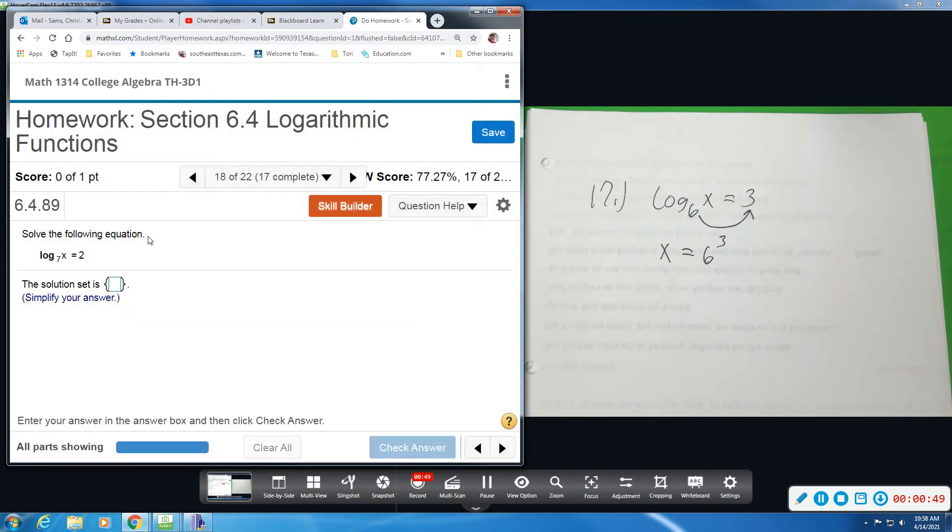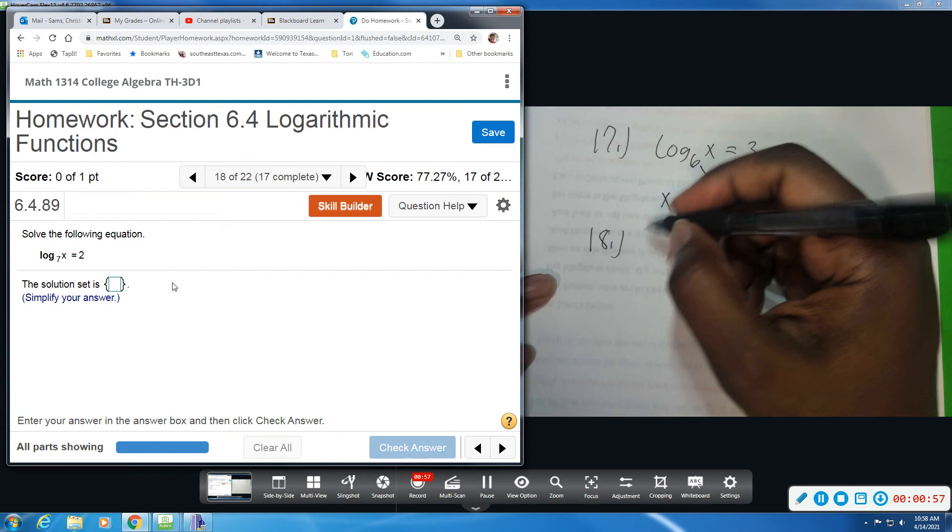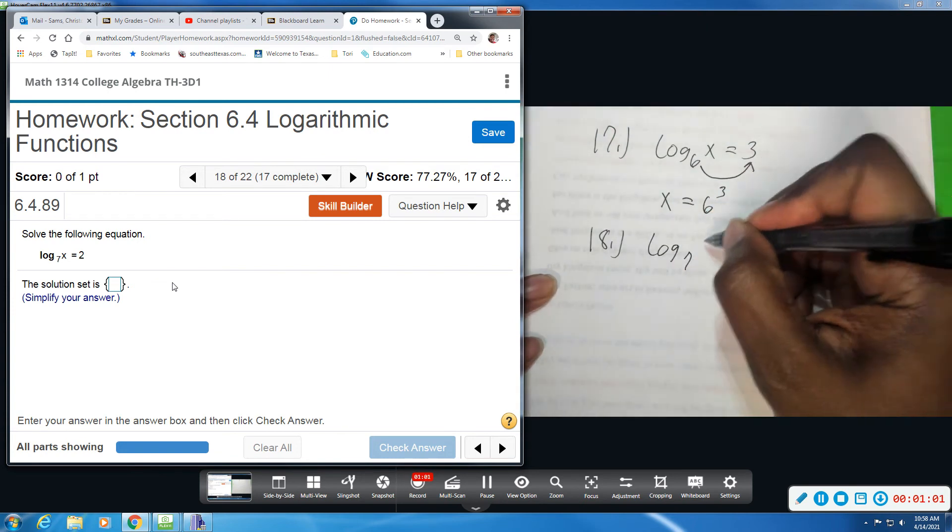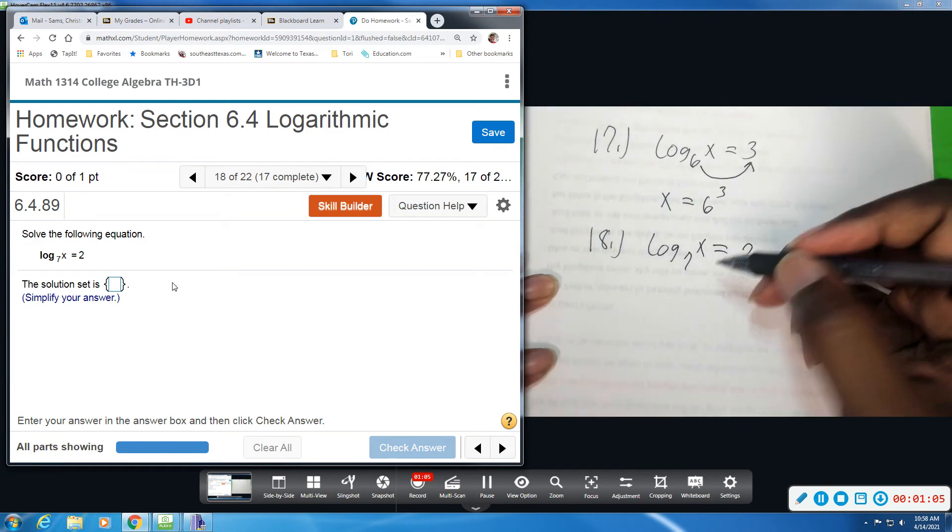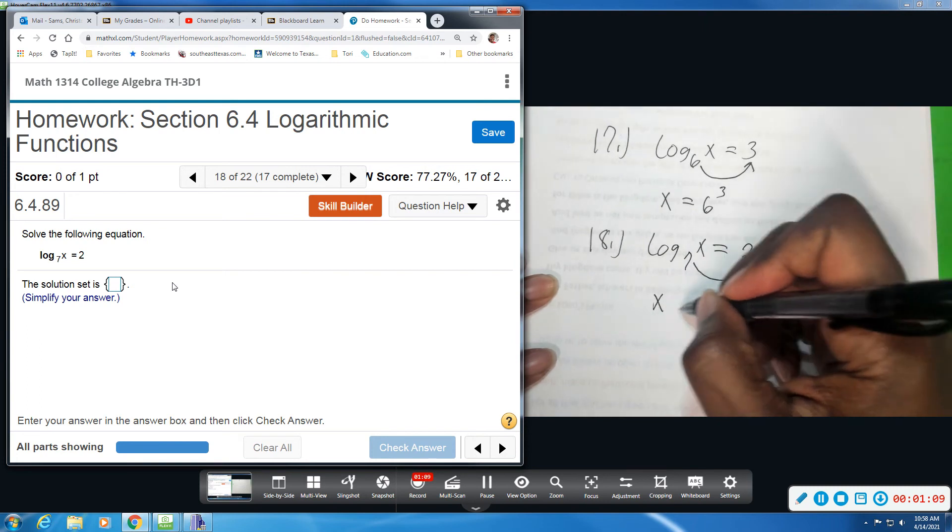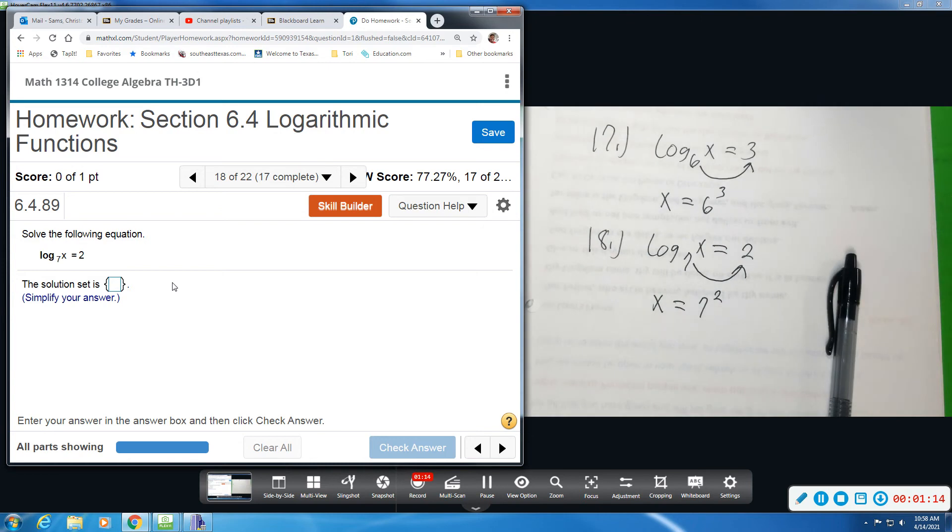Alright, 18, we're going to solve this expression. So we have log base 7 of x equals 2. So again, I would write this in exponential, bring this to my power, and so I have x equals 7 squared, and 7 squared is 49. So we get that x equals 49.